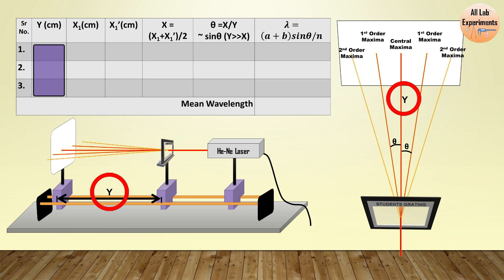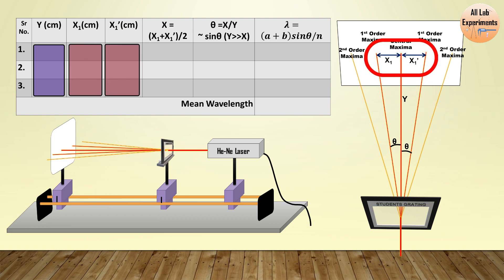We can change this value and observe different set of values. Now for this value of Y we will observe two values X₁ and X₁'. These values are the deviation of the light from the central maxima. So on the paper you can use your pen or pencil to mark them.